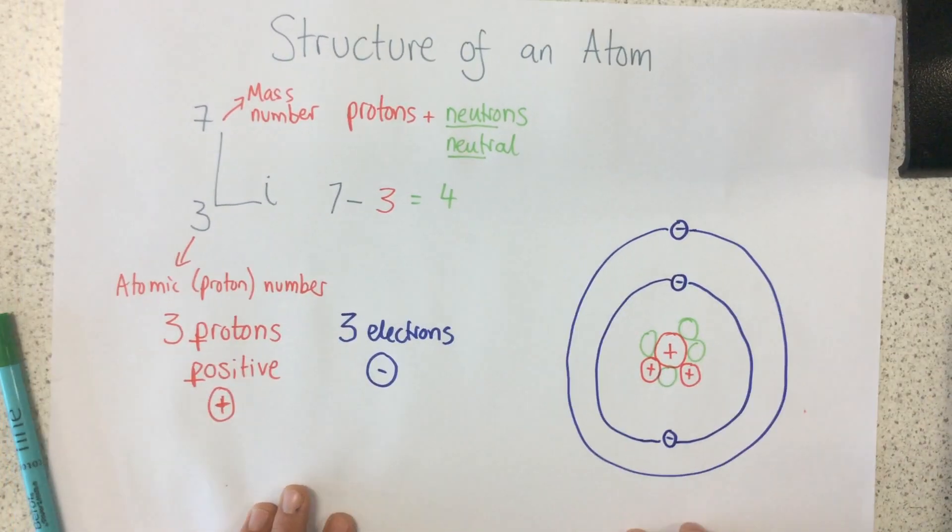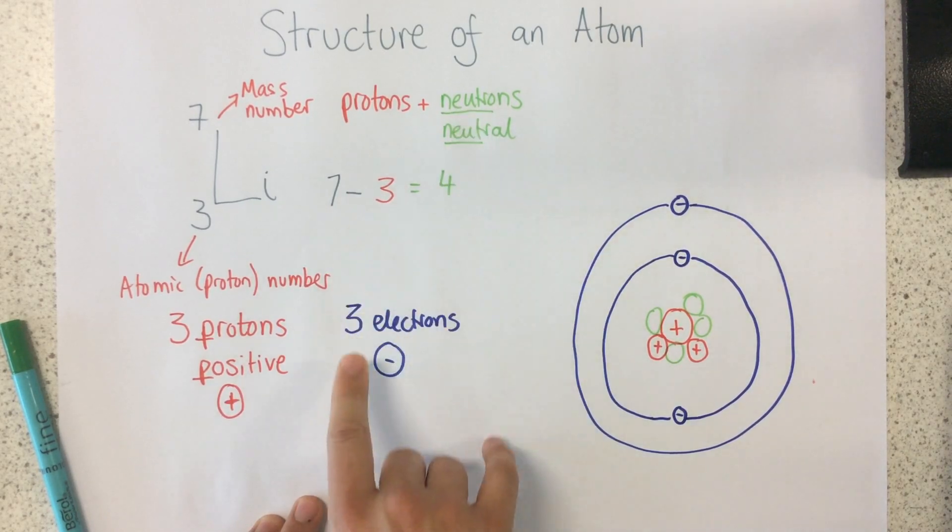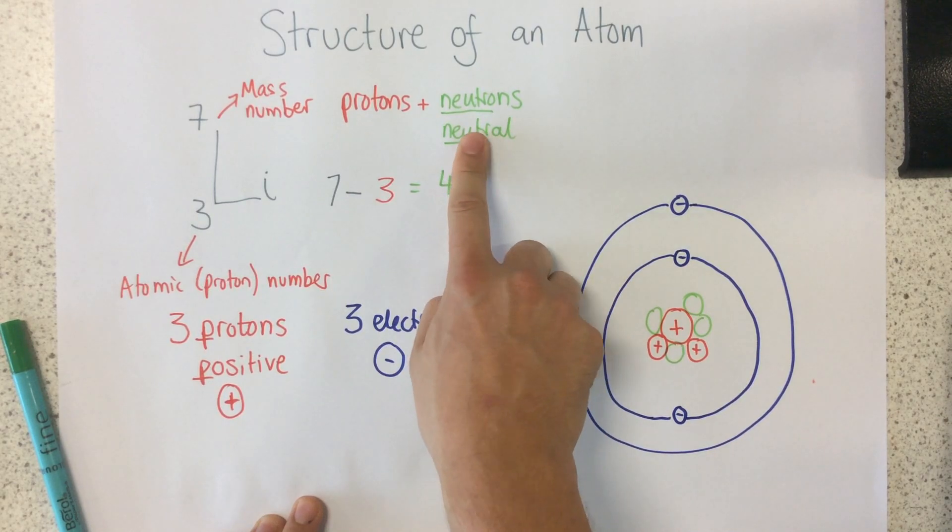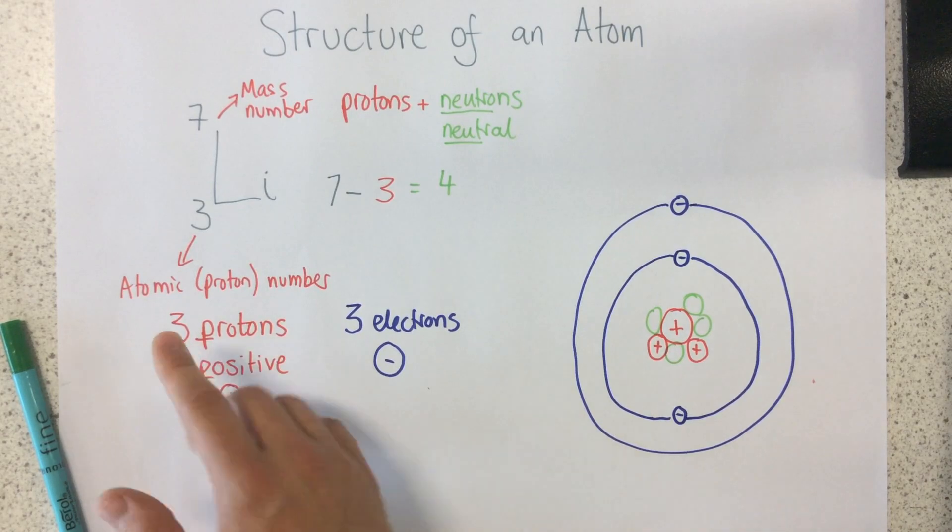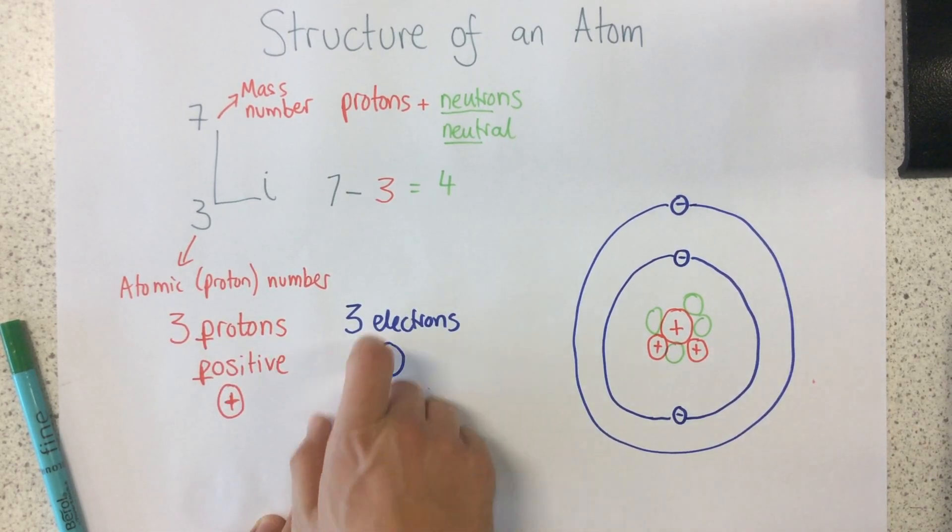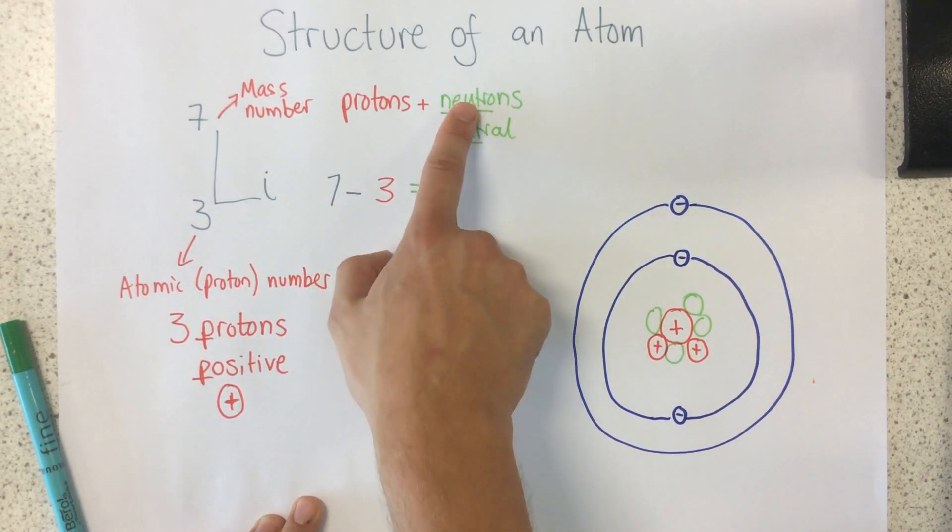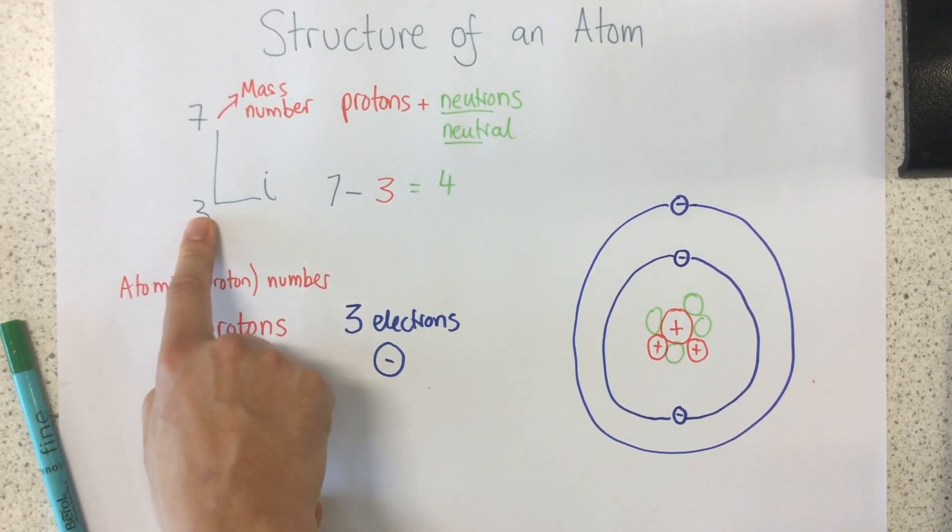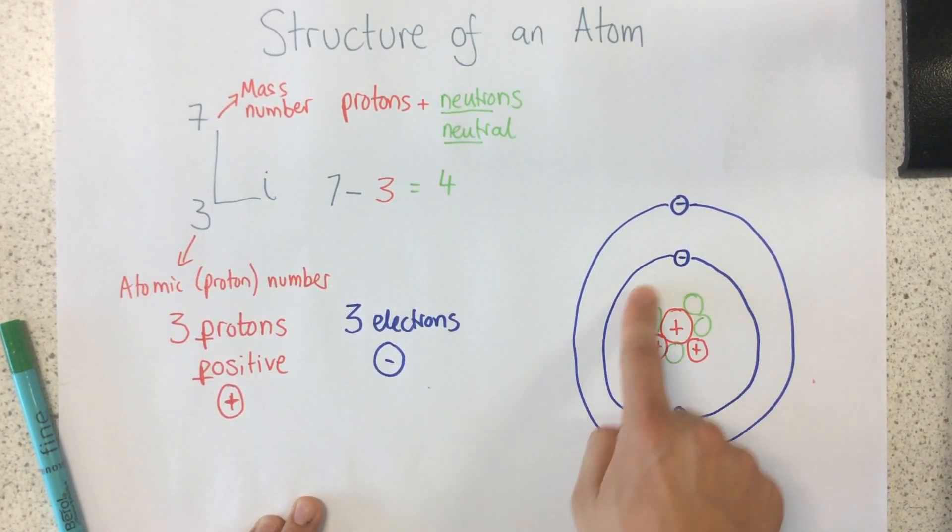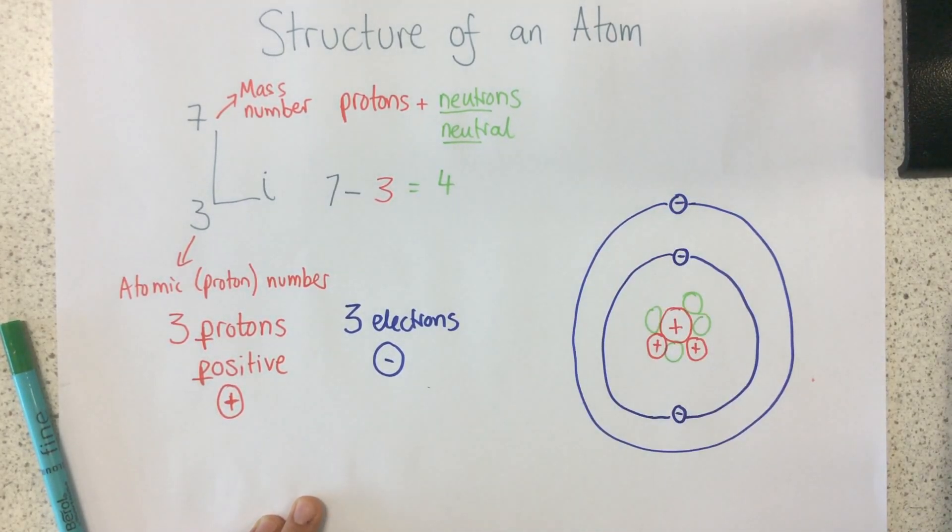So, quick recap. Atoms are made of protons, neutrons, and electrons. Protons are positive. Neutrons are neutral. And electrons are negative. The atomic number tells us the number of protons. It also tells us the number of electrons. The mass number tells the number of protons added to the number of neutrons. So, to find the number of neutrons, we take the mass number and we take away the proton number. Protons and neutrons go in the nucleus. Electrons go in shells around the outside.